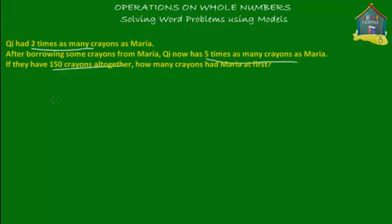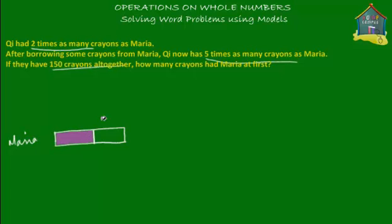So what do we know? We know that she had two times as many crayons as Maria. Let's draw the model diagram for that. If Maria had this block of crayons, then she would have twice as many. Let's put a line here which tells you how many crayons Maria had at first and how many she lent to Chi, or how many Chi borrowed from Maria. Let's color code that: purple will show how many crayons she has left after giving some to Chi, and blue will show how many crayons she gave to Chi.